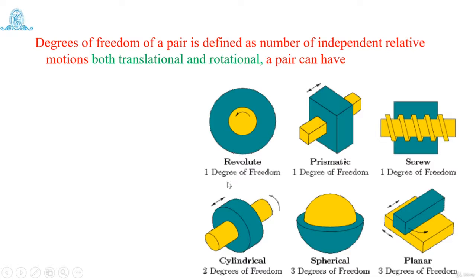Taking the example of a revolute pair — its degrees of freedom is one. There is a circular hole and through that circular hole a circular shaft is inserted. In a revolute pair, two links have a relative revolving or turning motion relative to each other. The shaft is not allowed to slide inside the hole — it has only one motion: a rotational or turning motion. That is why it has only one degree of freedom.